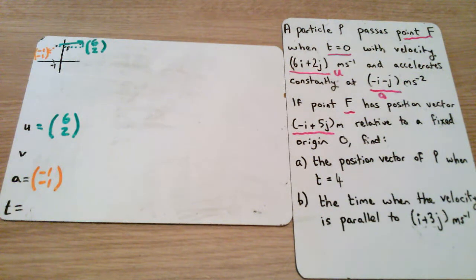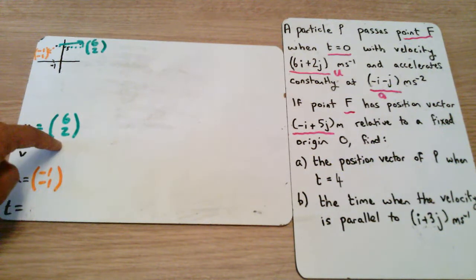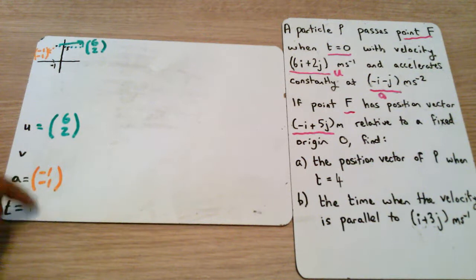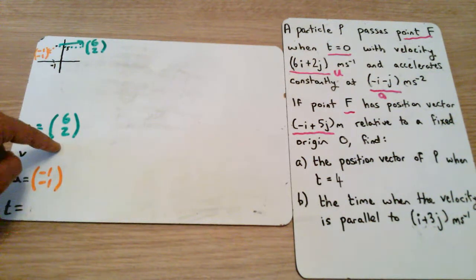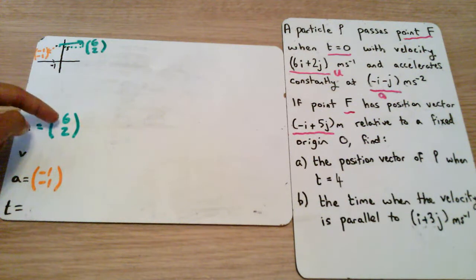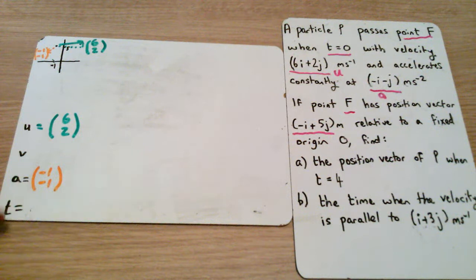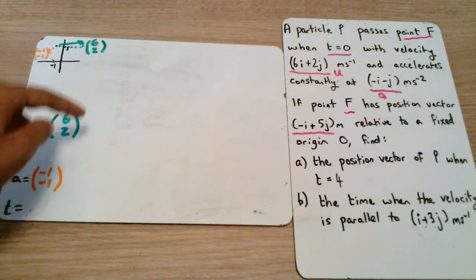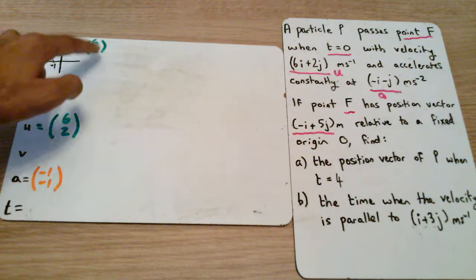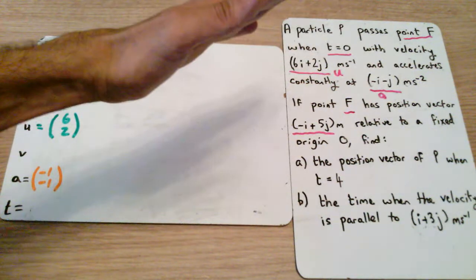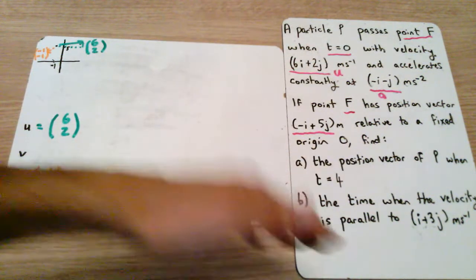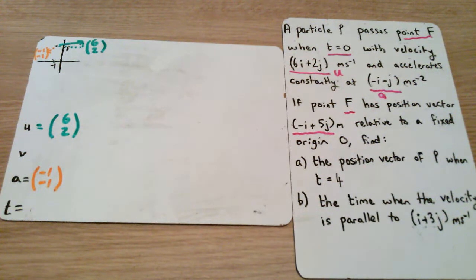Now what that means, that acceleration of minus 1 minus 1, it means that every second this velocity is going to decrease by 1 and by 1. So when t is 0, the velocity is 6, 2. When t is 1, this decreases by 1 and this decreases by 1, so this would be 5, 1. When t is equal to 2, this would be 4, 0. It means that the direction of this is going to change. Every second the velocity of this particle is going to change.